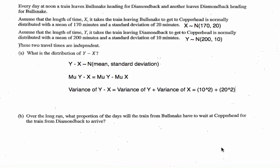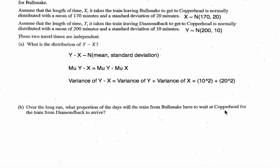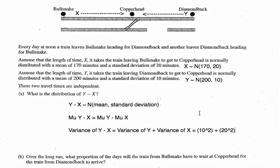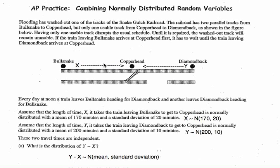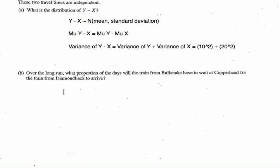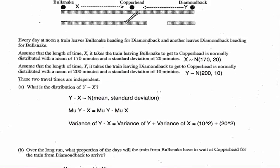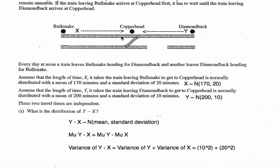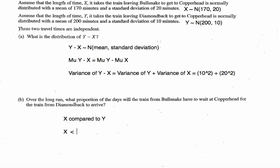For part B: over the long run, what proportion of days will the train from Bullsnake have to wait at Copperhead for the train from Diamondback to arrive? X represents travel times from Bullsnake. When will the Bullsnake train have to wait? That will happen when X gets there first — meaning the travel time for X was less than the travel time for Y. So we want to find the probability that X is less than Y.